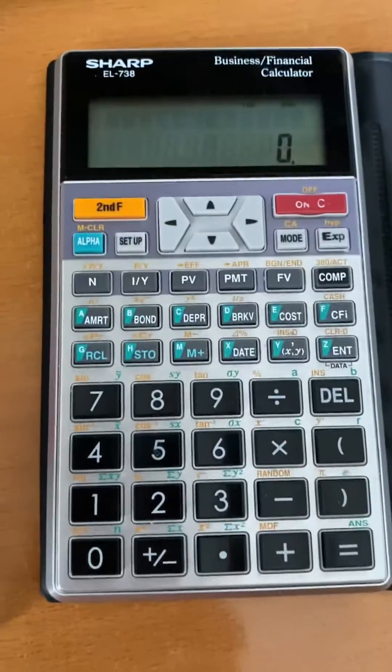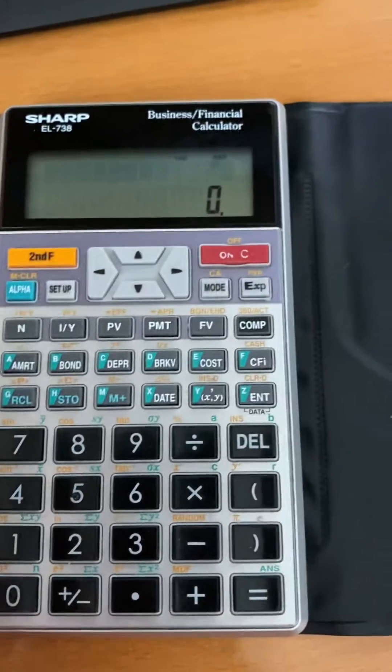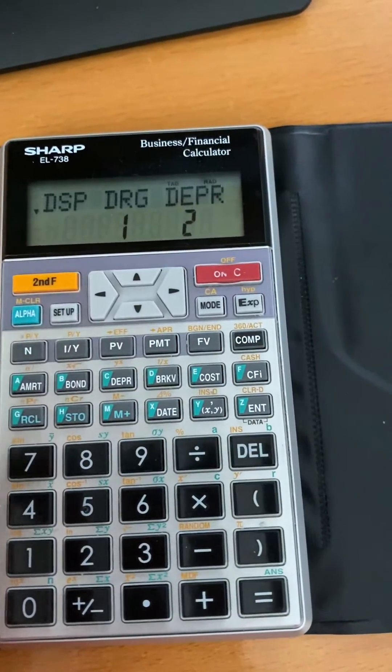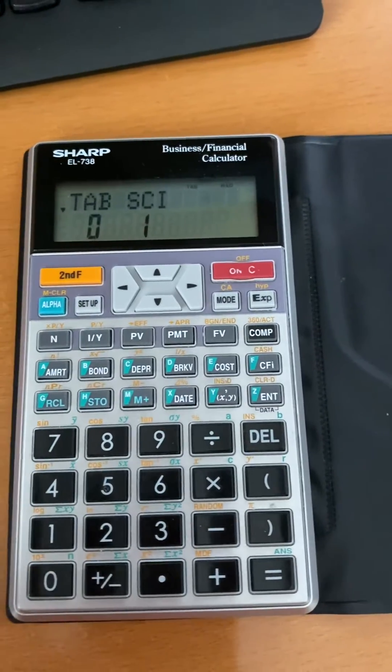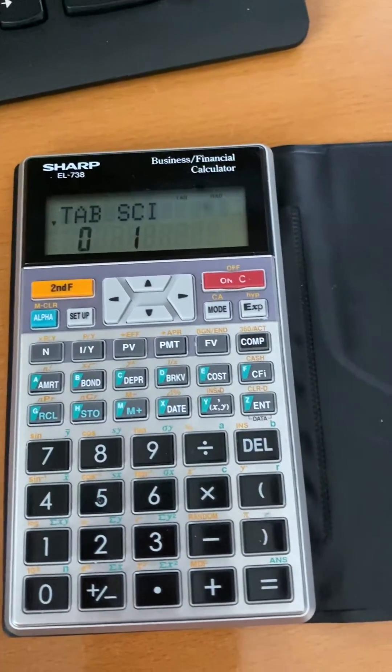Back to the calculator, I'll demonstrate how to do it the way I like. Press Setup, then for this blinking DSP, press zero. Tab refers to the decimal formatting.